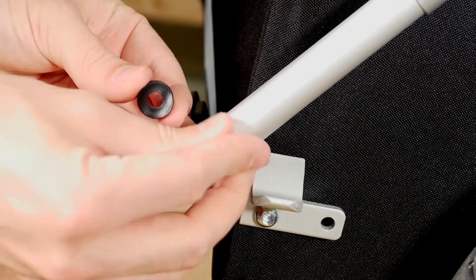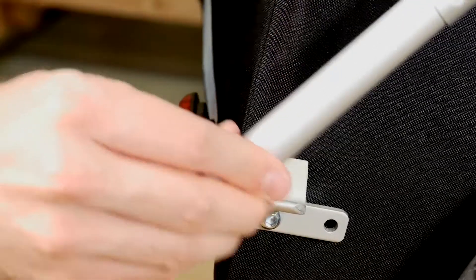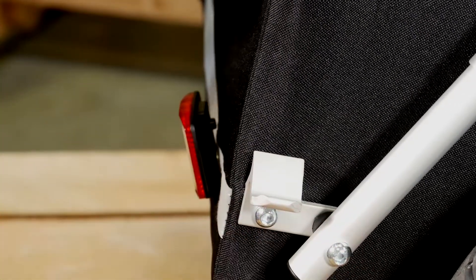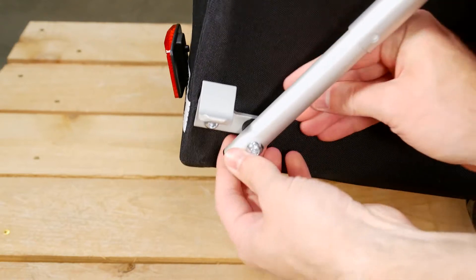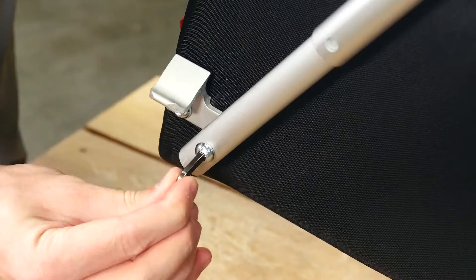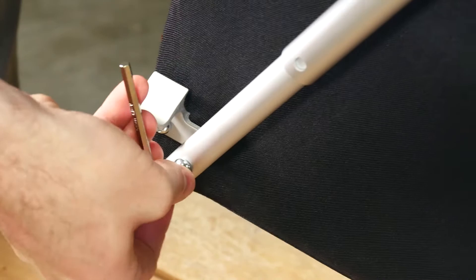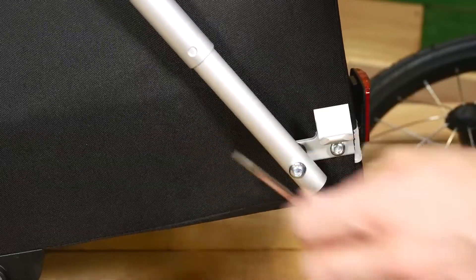Push the bolt through the strut, then put the black spacer on. Now attach it to the mount on the rear of the trailer. Then take the nut and screw it onto the end of the bolt. Perform these same steps on the opposite side.